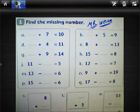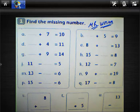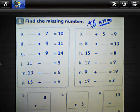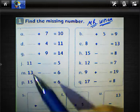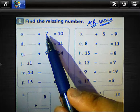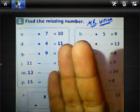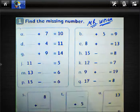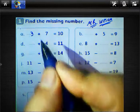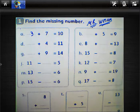Today we will solve all the questions about addition and subtraction. Look at question number one: find the missing number. A plus 7 equals 10. We must count from 7 to 10 — just after 7: 8, 9, 10 — so the result will be 3.